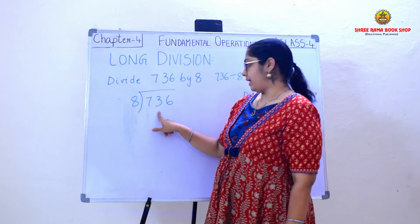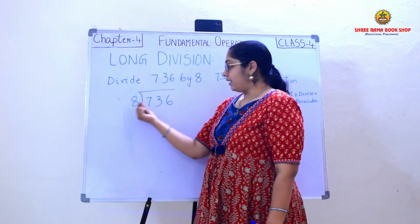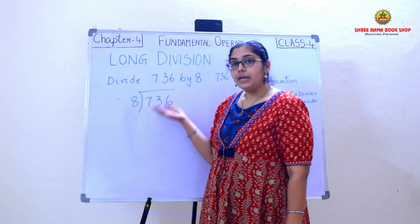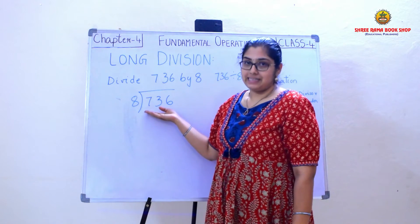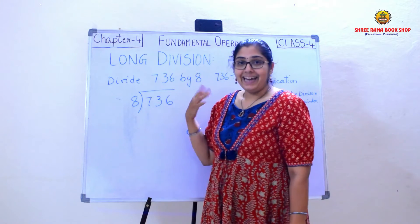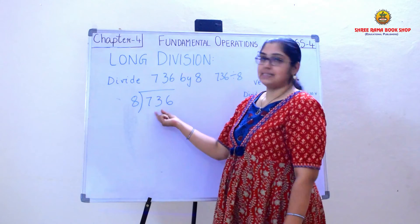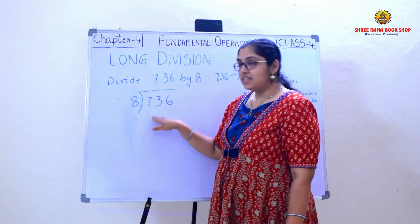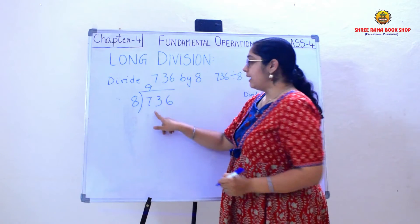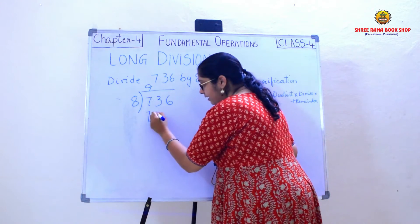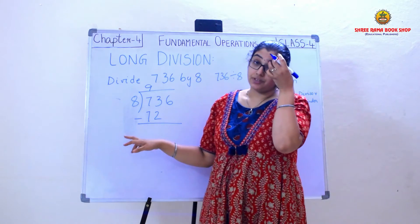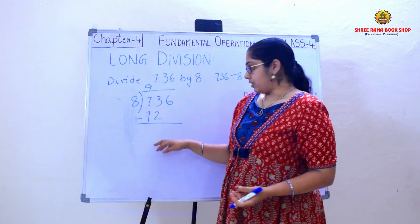So I need to find 73. I need to read out the 8 times table until I get 73 or the number nearest to 73. So 8 ones are 8, and so on. 8 nines are 72, which is the nearest number. So I will write 9 in the quotient and here I will write 72. Now I need to subtract. Why subtracting? Because division is repeated subtraction.